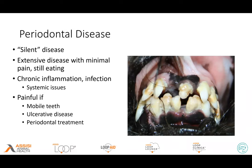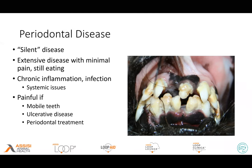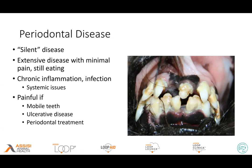Periodontal disease, for the most part, is considered a silent disease, even in people. Because it often starts out slowly — we start getting inflammation and infection and bone loss and gum loss — it usually doesn't have excruciating pain even with extensive disease, because it happens so gradually.